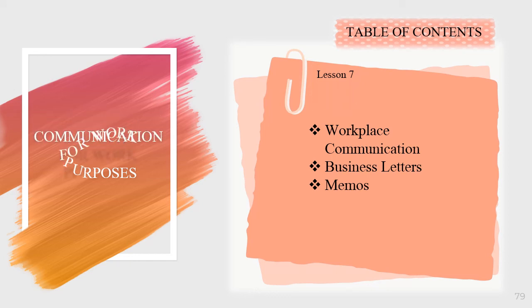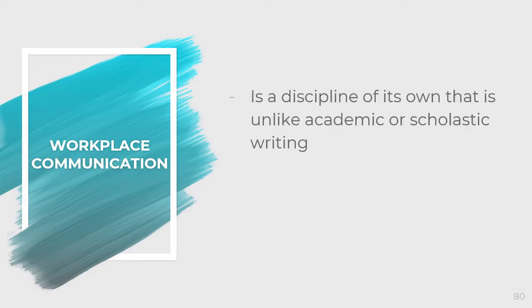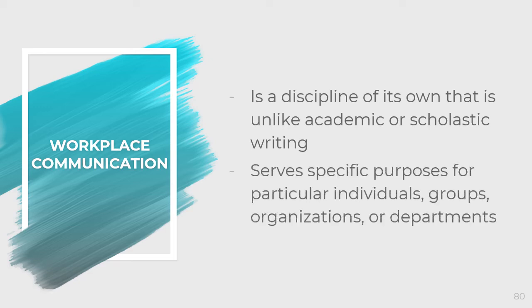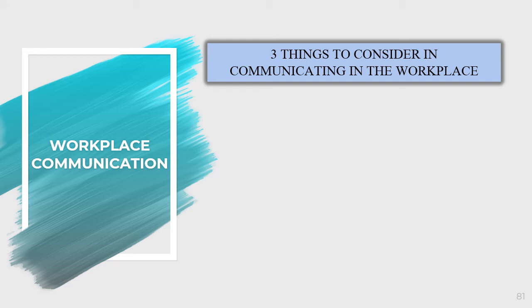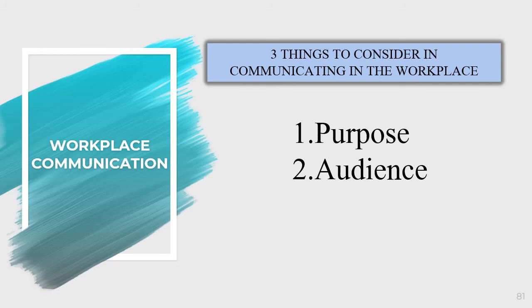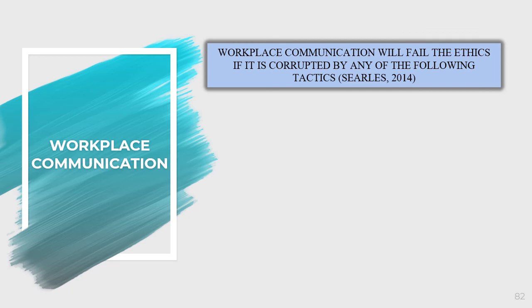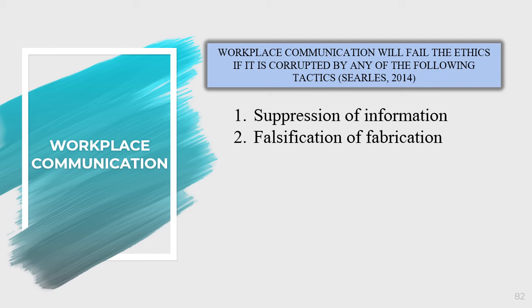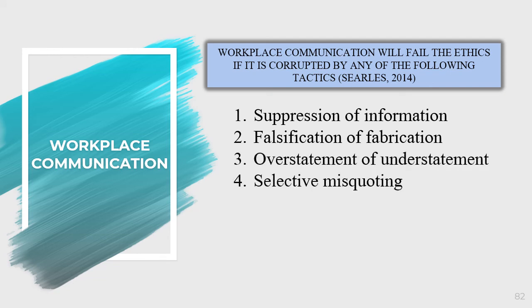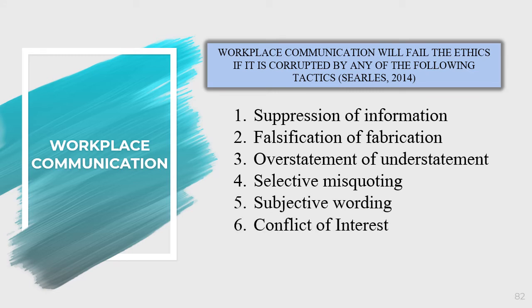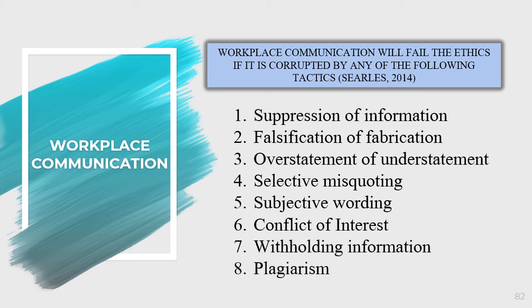Lesson 7 will be Communication for Work Purposes. Workplace communication is a discipline of its own, unlike academic or scholastic writing. It serves specific purposes for particular individuals, groups, organizations, or departments. Three things to consider in communicating in the workplace: purpose, audience, and tone. Workplace communication will fail ethically if corrupted by: suppression of information, falsification or fabrication, overstatement or understatement, selective misquoting, subjective wording, conflict of interest, withholding information, and plagiarism.